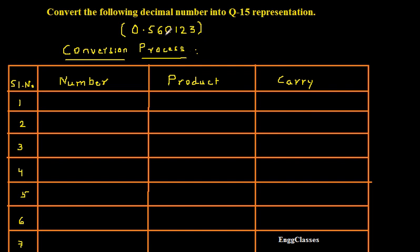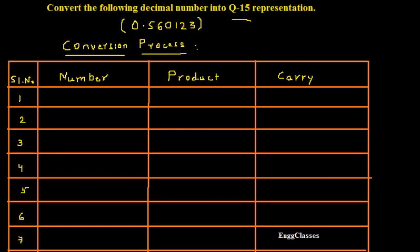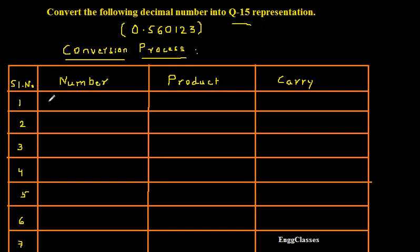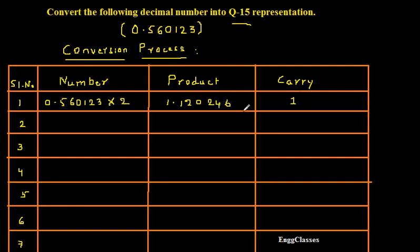So how do I start the process? The number is 0.560123. As there is Q15 representation, I need to carry out 15 iterations. First let me start with the conversion process. I will consider the number as 0.560123 and multiply this by 2. I am going to get the product as 1.120246. The carry is 1. The next number for the iteration I would consider without the integer part, only the fractional part, that is 0.120246.